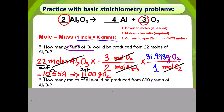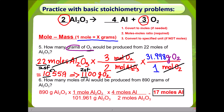Now pause the video and try number 6 on your own. Welcome back. You are given 890 grams of aluminum oxide. You do need to get to moles, therefore you are going to get rid of grams of aluminum oxide and get to moles of aluminum oxide. This number, 101.961, is the molar mass of aluminum oxide. Now that Step 1 is complete, you can do the moles-to-moles ratio, going from moles of aluminum oxide to moles of aluminum. You do not need Step 3 because the specified unit is moles. Therefore your answer should have been 17 moles of aluminum. Always check for sig figs.